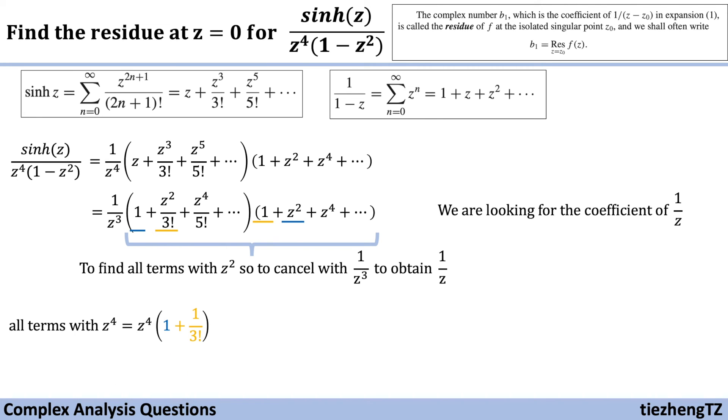Let's just rewrite. From the color code, you can check the answers. It should be 1 plus 1 over 3 factorial. Therefore, the coefficient is 1 plus 1 over 6, which is 7 over 6. Therefore, the residue at z equals 0 for this function is just 7 over 6.